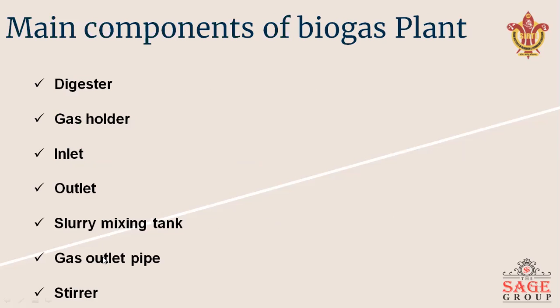The main components of a biogas plant are: the digester, gas holder, inlet, outlet, slurry mixing tank, gas outlet pipe, and a stirrer if any.